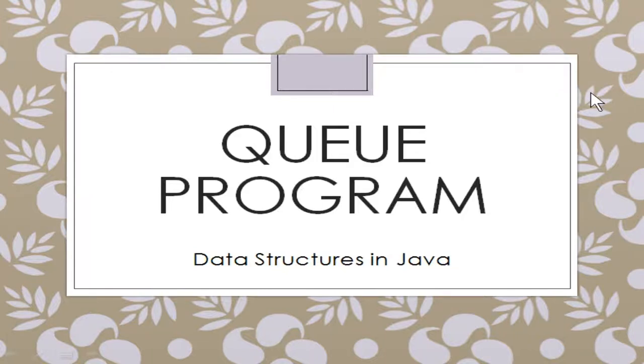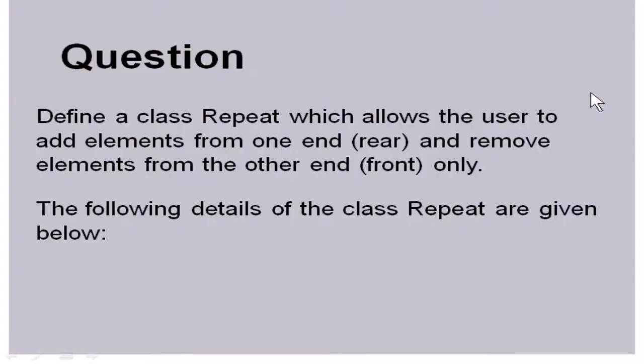Hello everyone. In this video we are going to see a program example which illustrates the Queue algorithm. Define a class 'repeat' which allows the user to add elements from one end, that is the rear, and remove elements from the other end, that is the front. The keywords 'rear' and 'front' indicate this is a Queue program, where insertion happens at the rear end and removal happens from the front end.